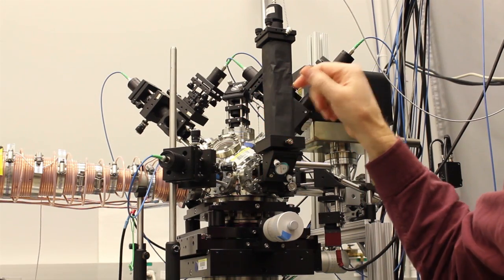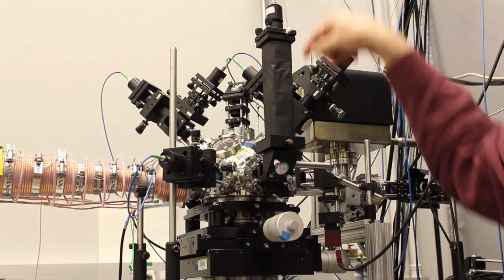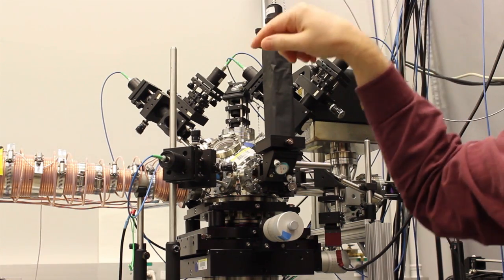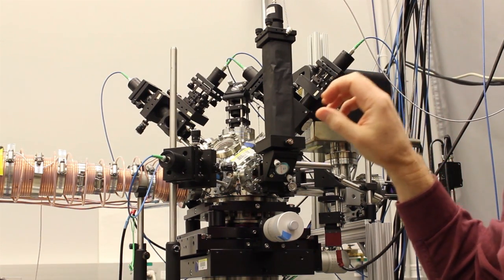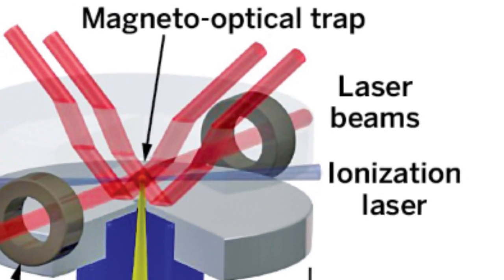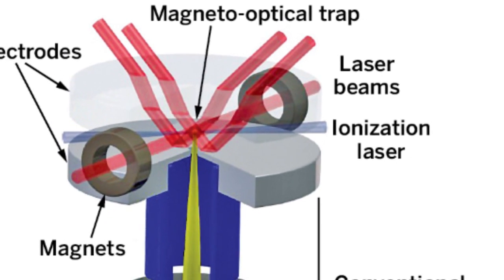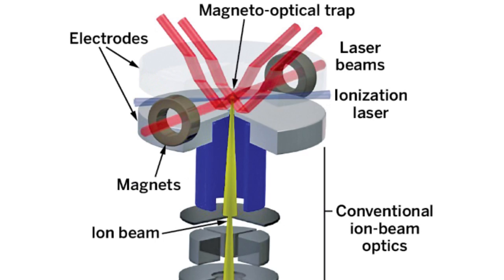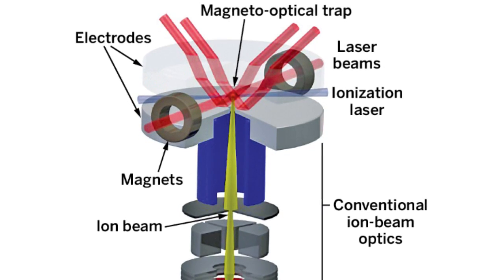In here there's a trap with lasers from six different directions and a magnetic field. It's called a magneto-optic trap, which basically catches those slowed atoms and cools them down to really cold temperatures—a few hundred micro kelvins above zero.